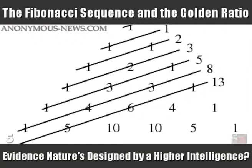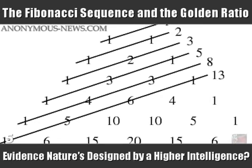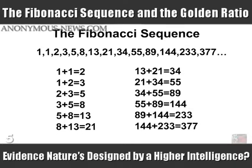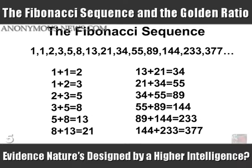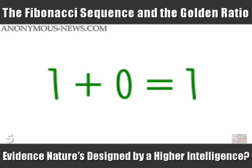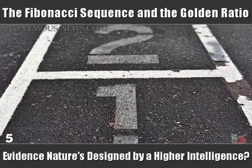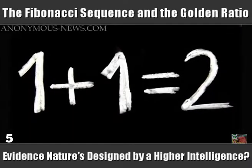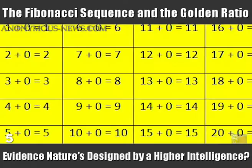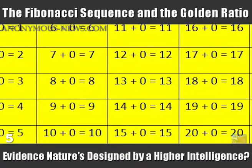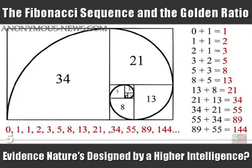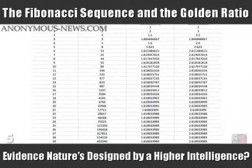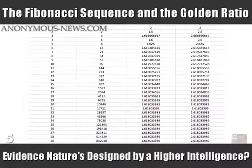The Fibonacci sequence is a string of numbers that begins with zero and one, which can be extended infinitely by adding up any two consecutive numbers to find the next in the sequence. When we add zero and one, we get one, which is the third Fibonacci number. Then we add one and one to obtain our fourth Fibonacci number, which is two. Continuing with this exercise, we get the numbers 3, 5, 8, 13, 21, 34, 55, 89, etc., in a pattern that can be extended all the way to infinity.